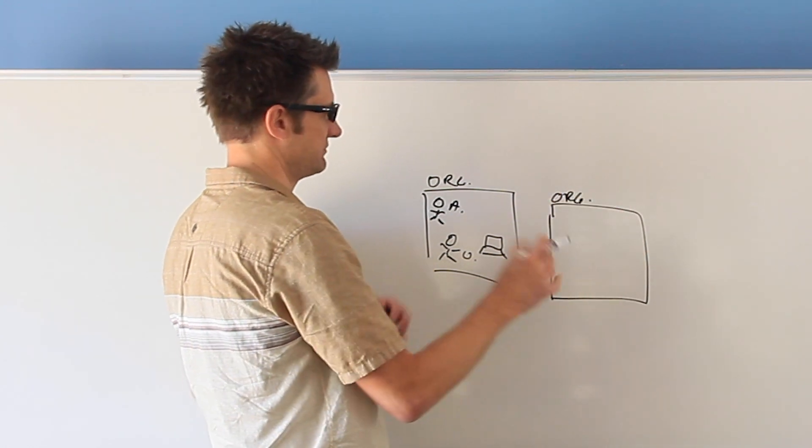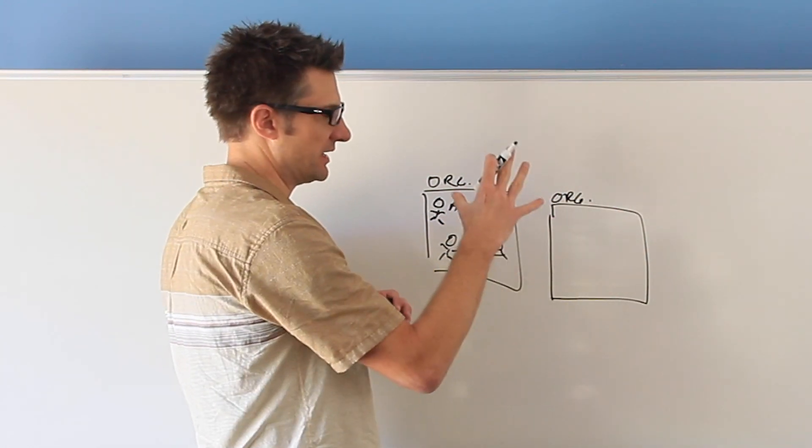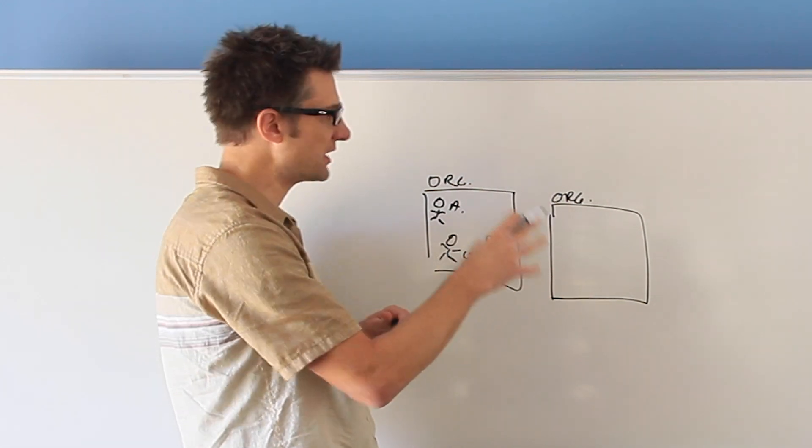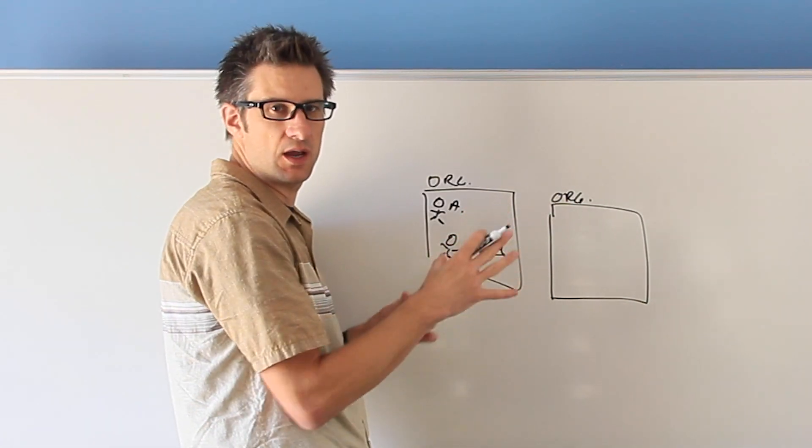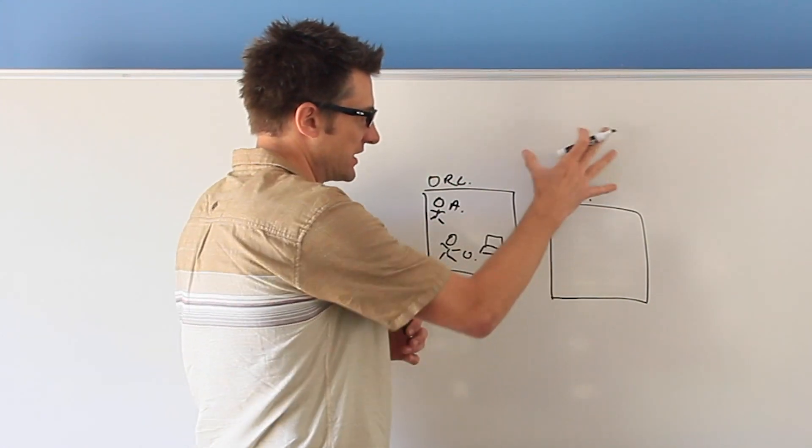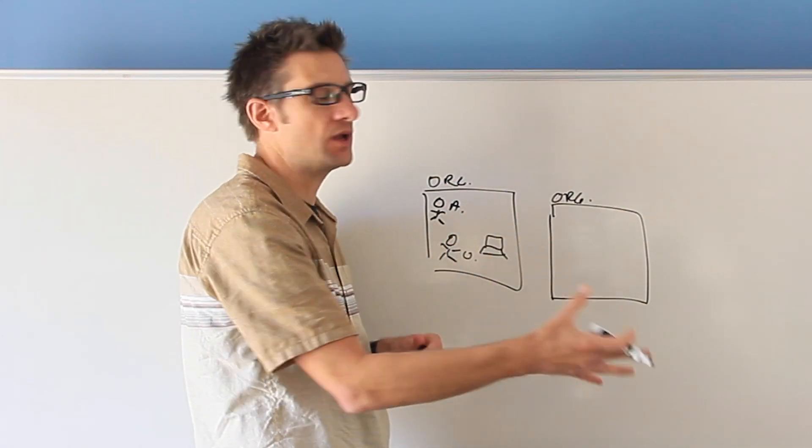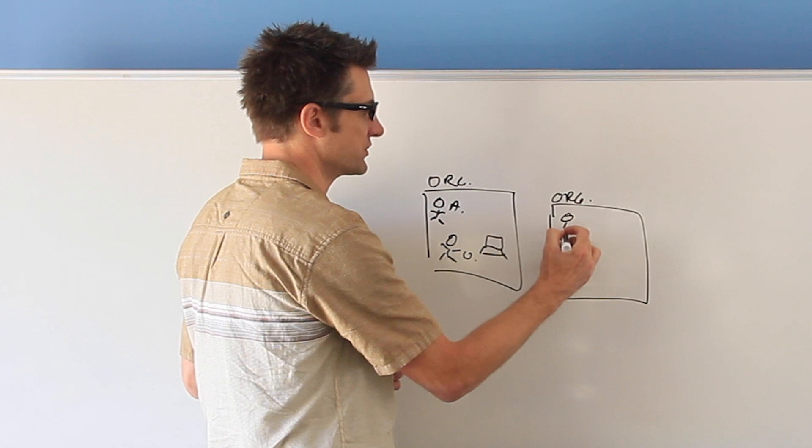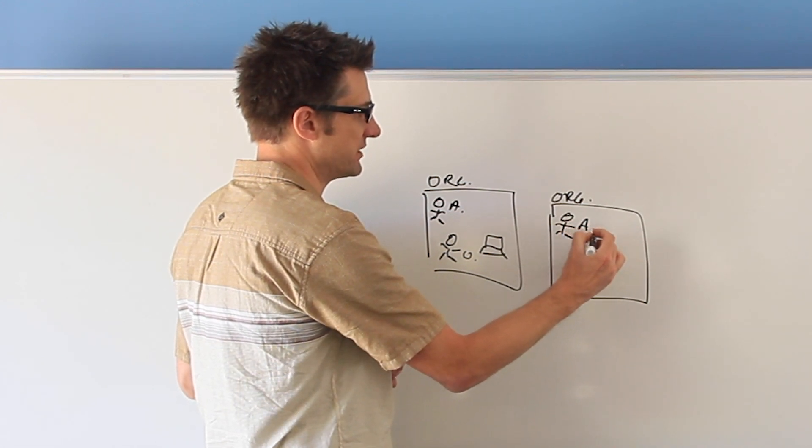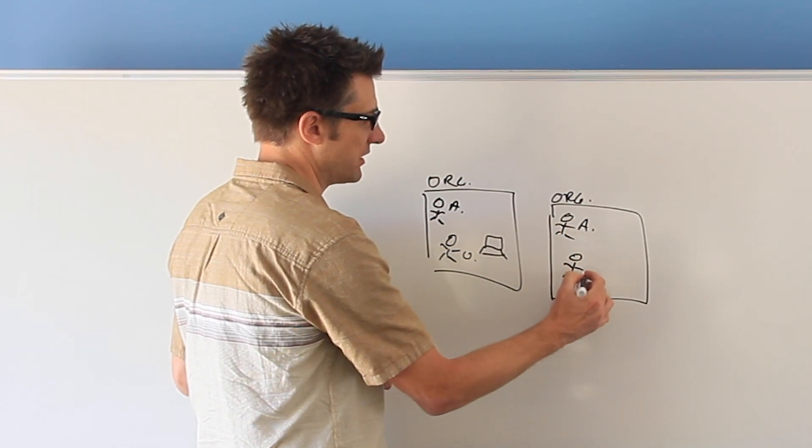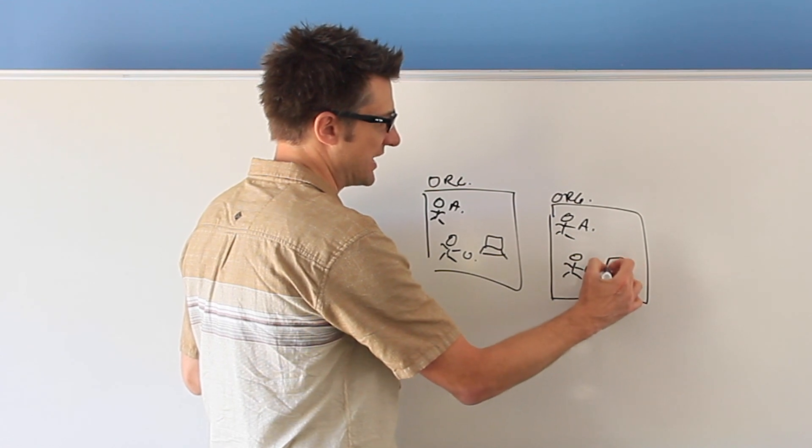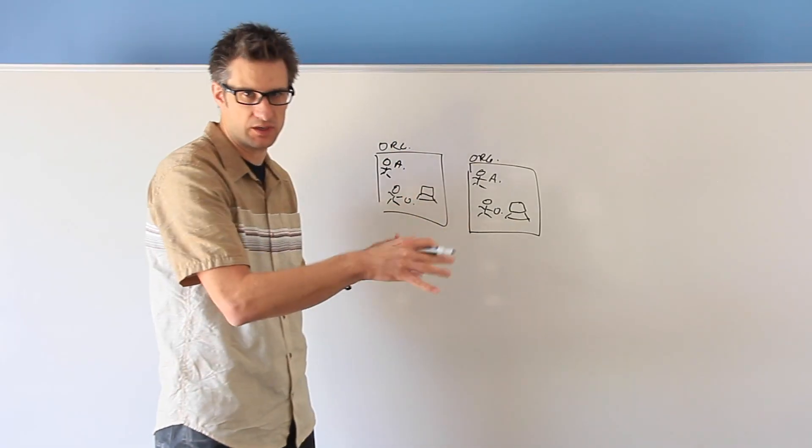In this case, an administrator comes to jumpcloud.com, they sign up for and create their first org. They have to manage another org, so they come in to jumpcloud.com, they create their second org, and of course they add in new unique administrators.